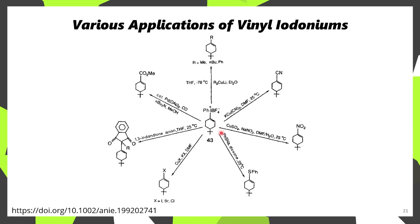So iodonium species are important to know about due to their wide applicability and the diverse range of products that can be prepared upon treatment with different nucleophiles under different sets of conditions.